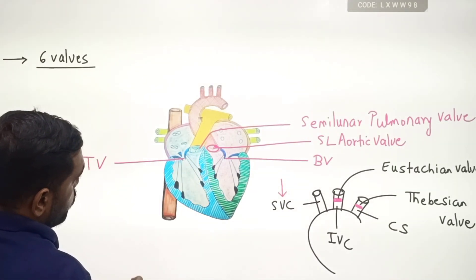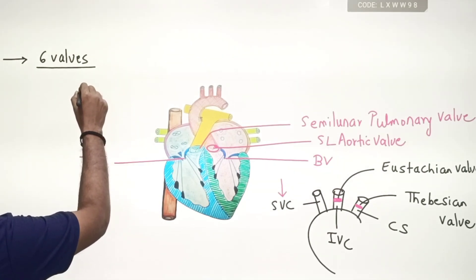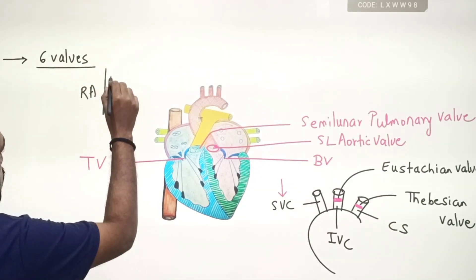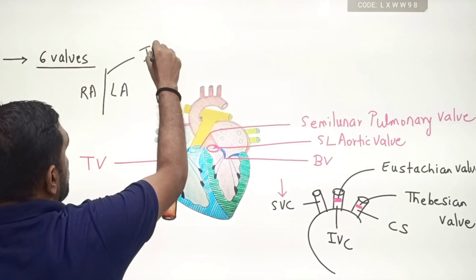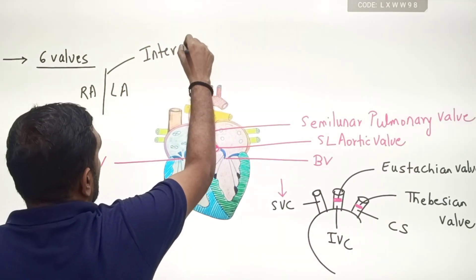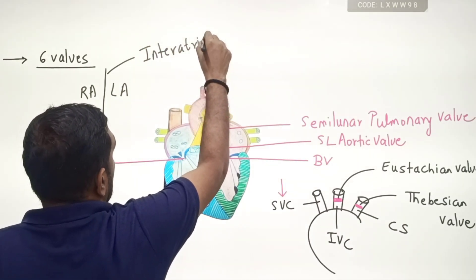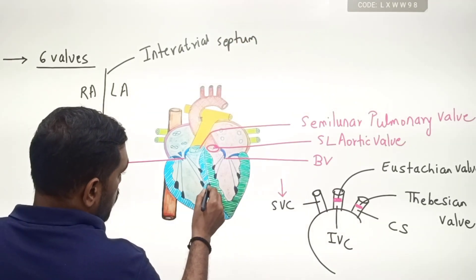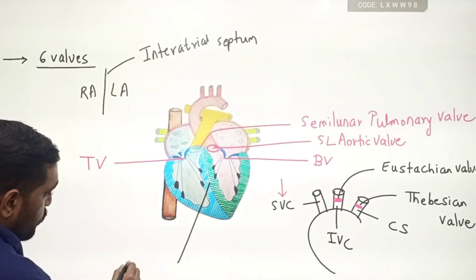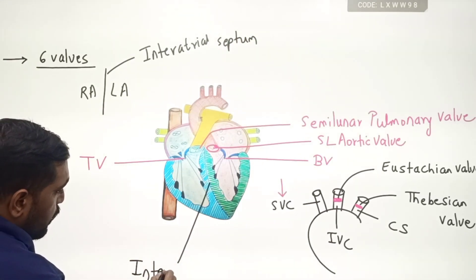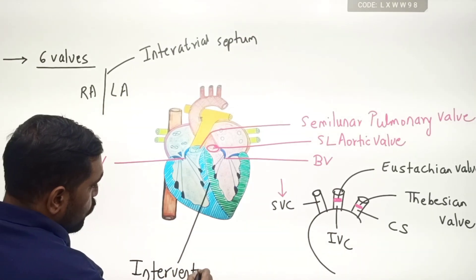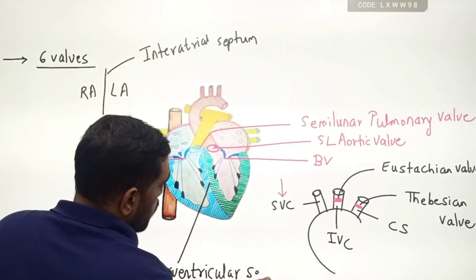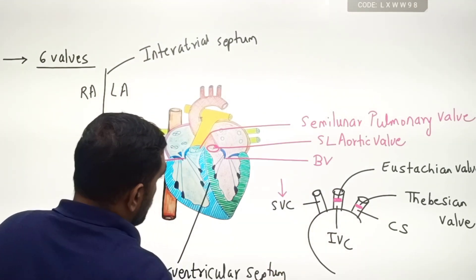The right atria and left atria are separated by a septum called the interatrial septum. So between the left atria and right atria there is a partition, or septum, called the interatrial septum. The two ventricles are also separated by a septum called the interventricular septum.